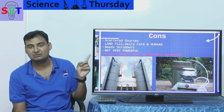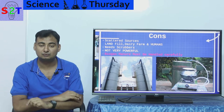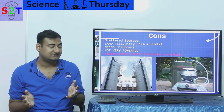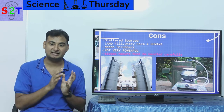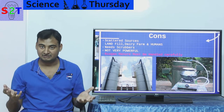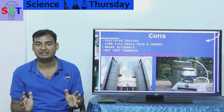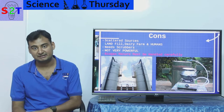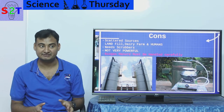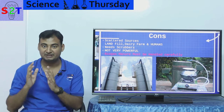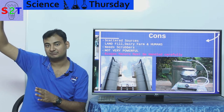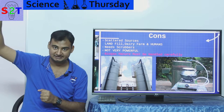The biggest con of biogas is what's called scattered sources. There are so many sources of biogas — and while that sounds good, it creates a collection problem. Landfills produce methane from biodegradable material. Dairy and cow farms have insane amounts of bio-material, and many now have their own biogas plant. A third source is human feces — that's why septic tanks have a chimney-like structure to let methane escape.